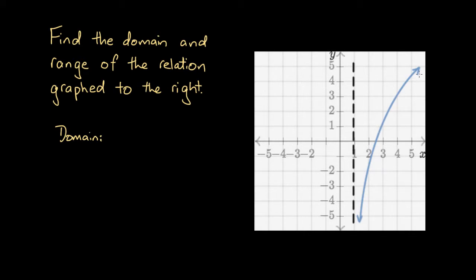The way we find the domain is that we project this curve onto the x-axis. Let's consider this arrow first. This arrow indicates that this curve continues this behavior of heading in this direction beyond the confines of our graph, which indicates that all the x values that extend beyond this graph are valid inputs for this relation. In other words, all the values of x greater than x equals 5 are valid inputs and would produce valid outputs when substituted into the relation. We can indicate this by drawing an arrow on this side of our number line, indicating that the set of valid x values continues beyond this graph and approaches x equals infinity.